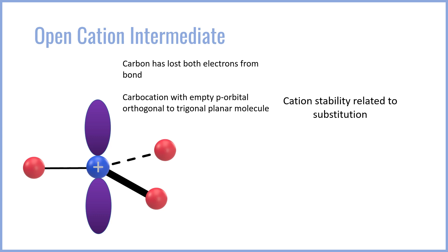The stability of the resulting cation that forms is directly related to the substitution of the carbon that the leaving group leaves from. Specifically, if we consider the possibility of a methyl, primary, secondary, and tertiary carbon, those create different cations.